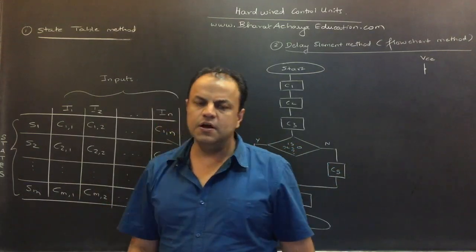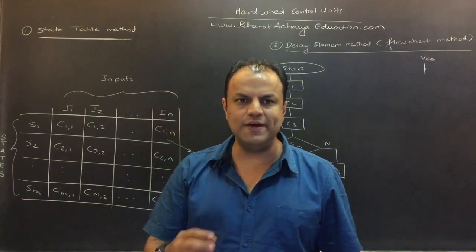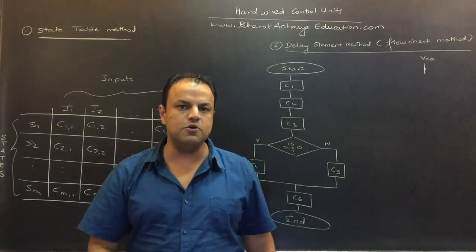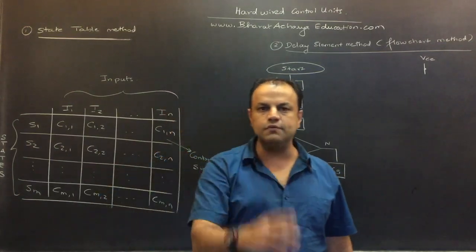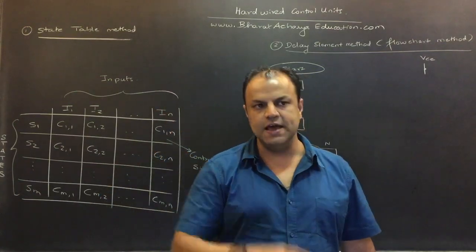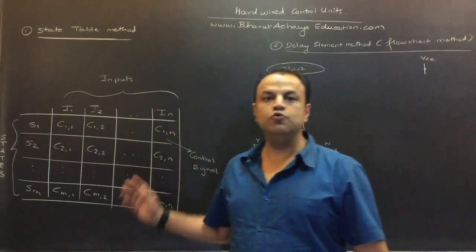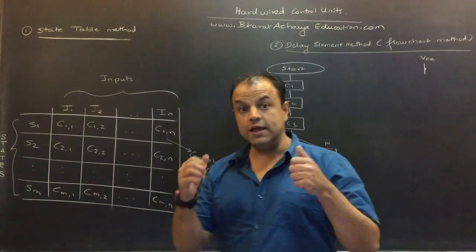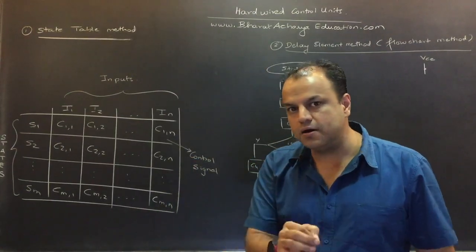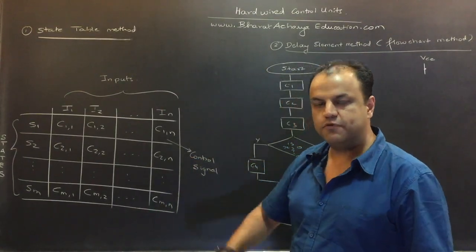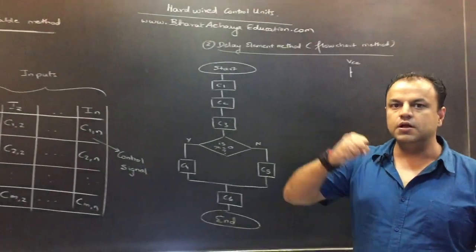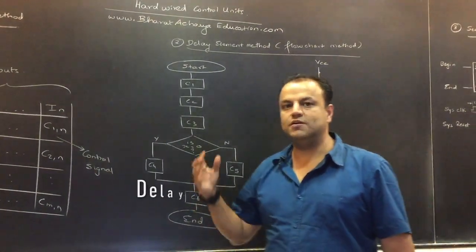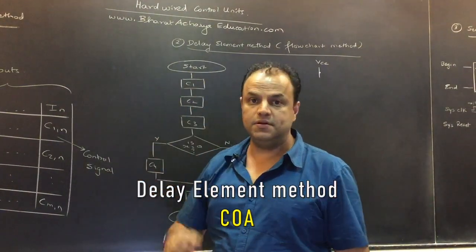The state table method is very simple but also very inefficient. It is ideally suited for very small processors with a handful of instructions. Anything bigger than that creates too big a circuit which becomes unmanageable. Then, as a remarkable improvement, instead of starting from a table we take the starting point as a flow chart — the flow chart method, called the delay element method.